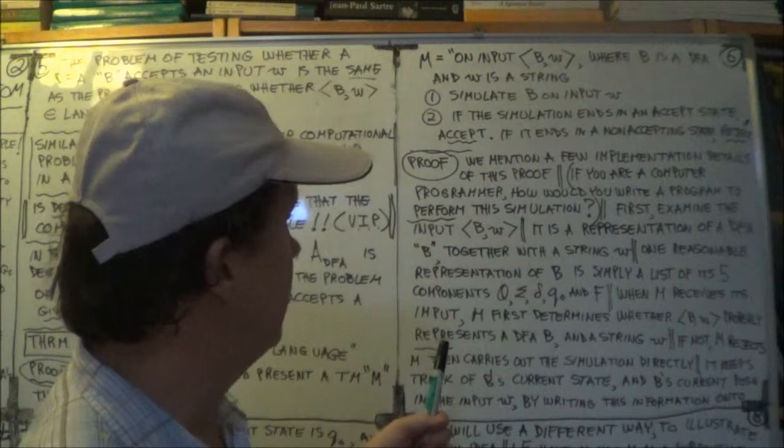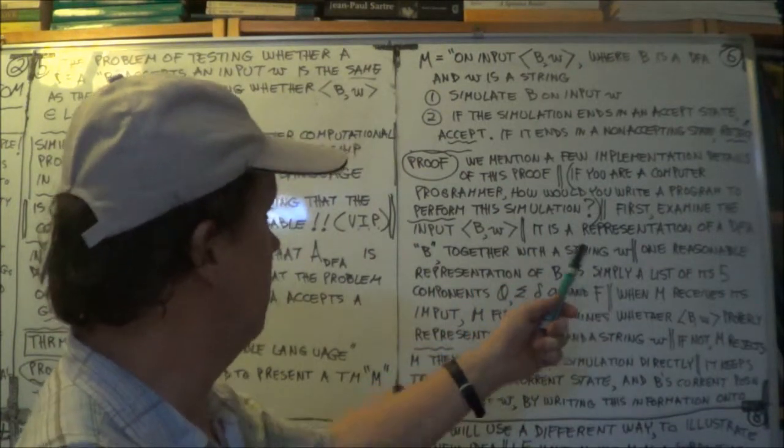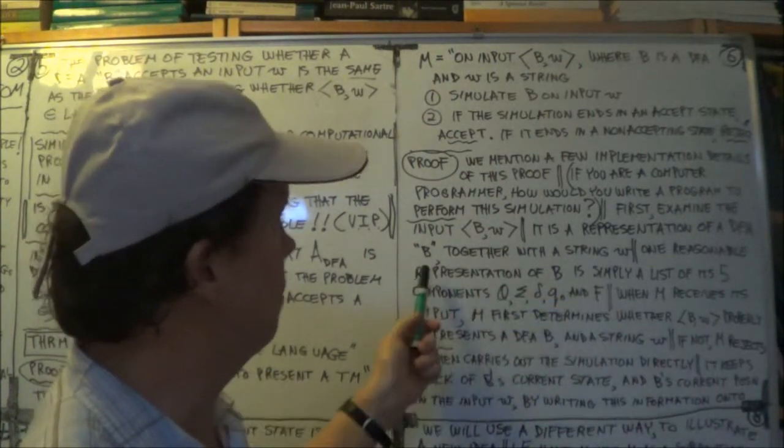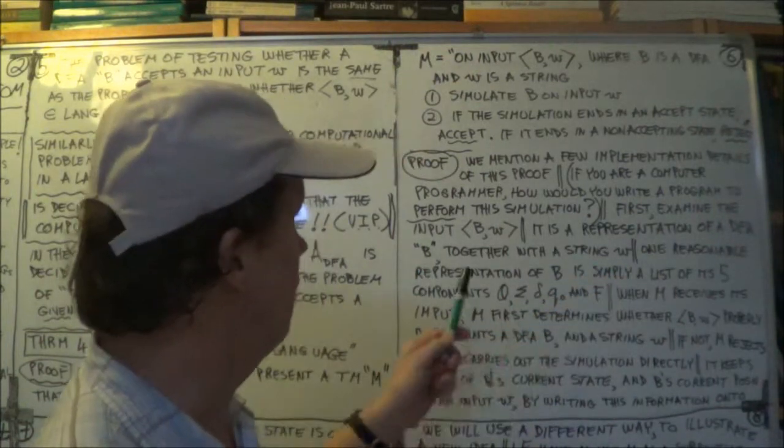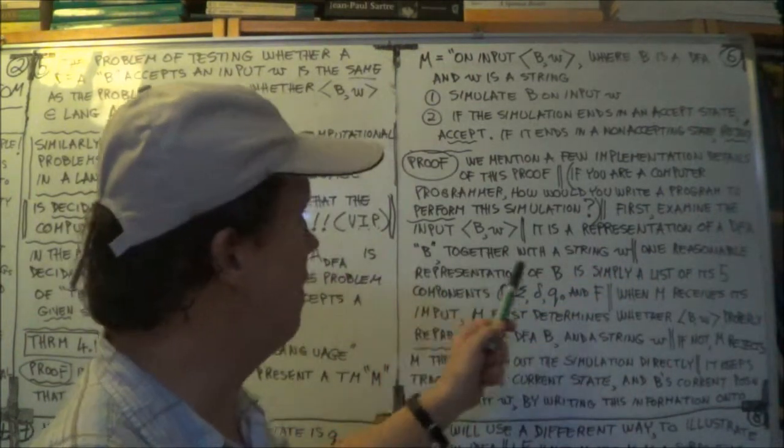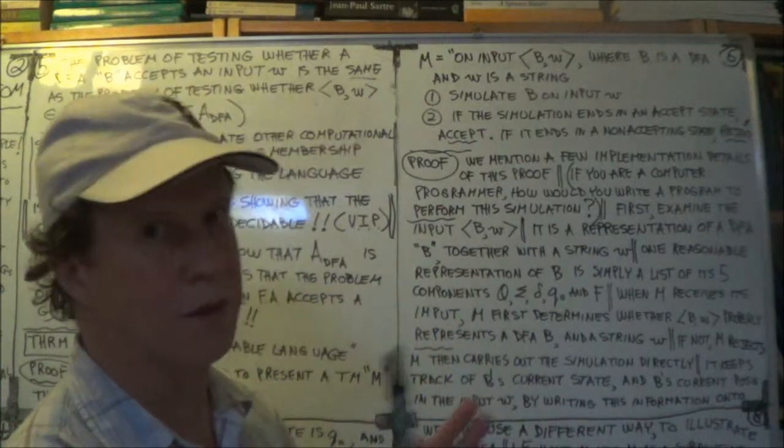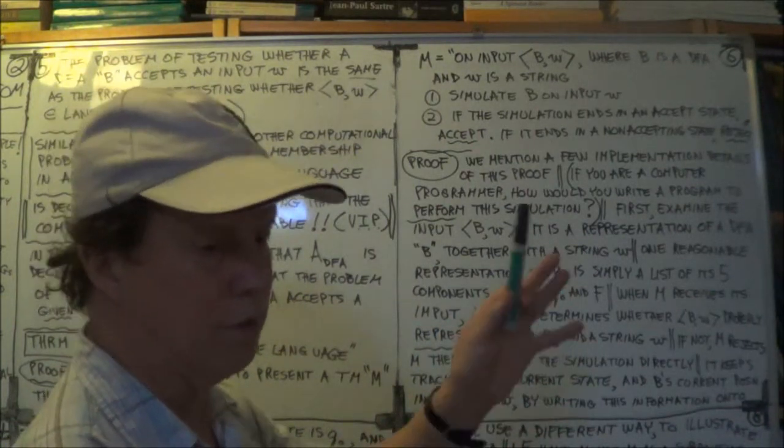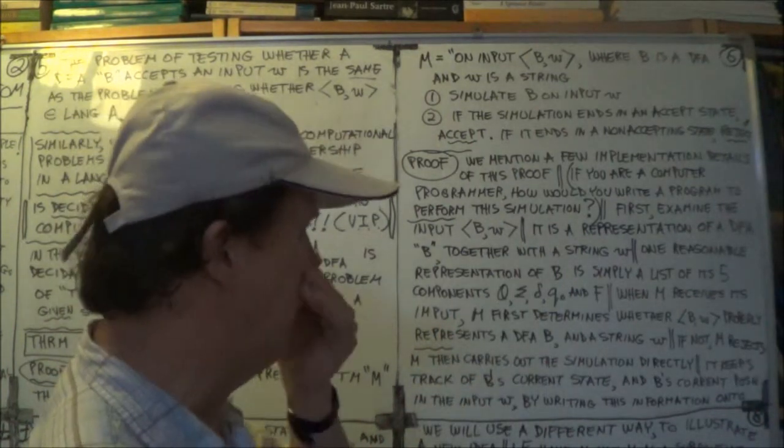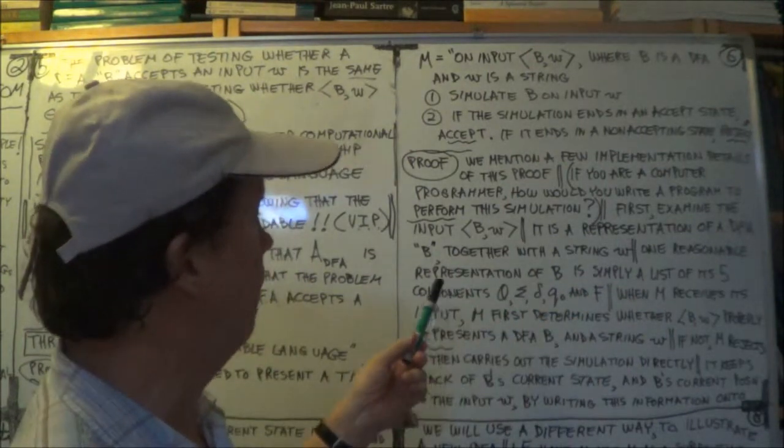Now, so assume that that goes through, that is a correct representation of your machine B and the string W. So let's assume that it was correct, if not, reject. But if it is okay, well then we proceed further, right?